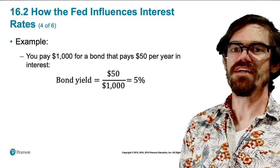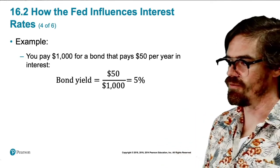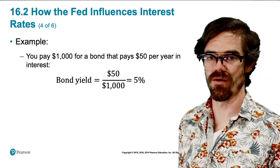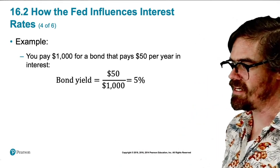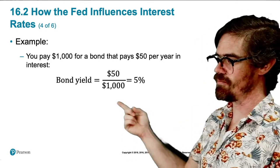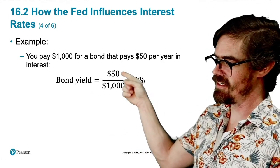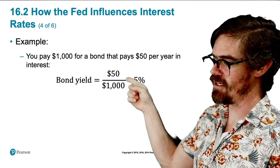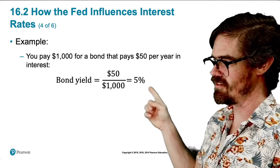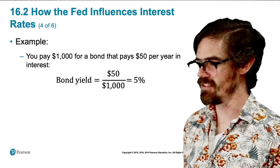To understand how the price of bonds translates into an interest rate change, let's go over an example. Suppose that you pay $1,000 for a bond that pays $50 per year in interest. What this means is that the bond yield — the percent yield on that bond — is 5%. It gives you $50 per year for a $1,000 investment, so the return on your investment is 5%.